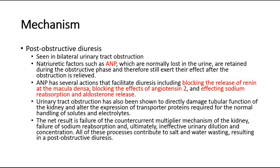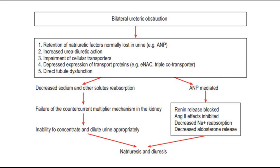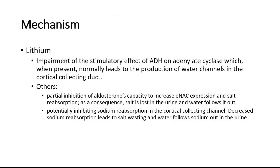The net result is failure of the countercurrent multiplier mechanism of the kidney, failure of sodium reabsorption, and ultimately ineffective urinary dilution and concentration, contributing to salt and water wasting resulting in post-obstructive diuresis. This is shown in the flowchart: bilateral ureteric obstruction causes retention of ANP, increased urea diuretic action, impairment of cellular transporters, depressed expression of transport proteins, and direct tubule dysfunction. These reduce sodium and other solute reabsorption, causing failure of the countercurrent multiplier mechanism, so the kidney is unable to concentrate and dilute urine appropriately, hence causing natriuresis and diuresis.